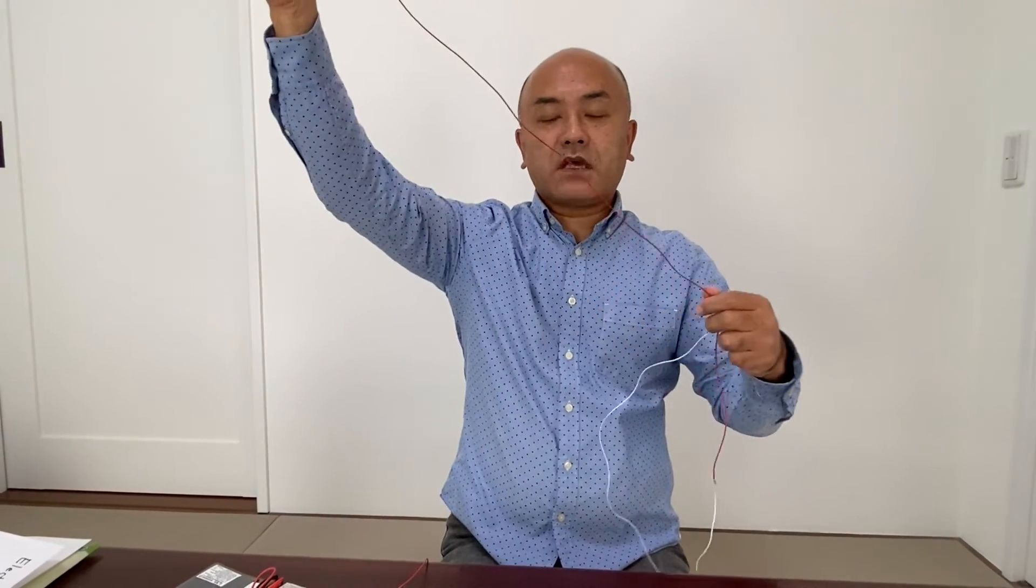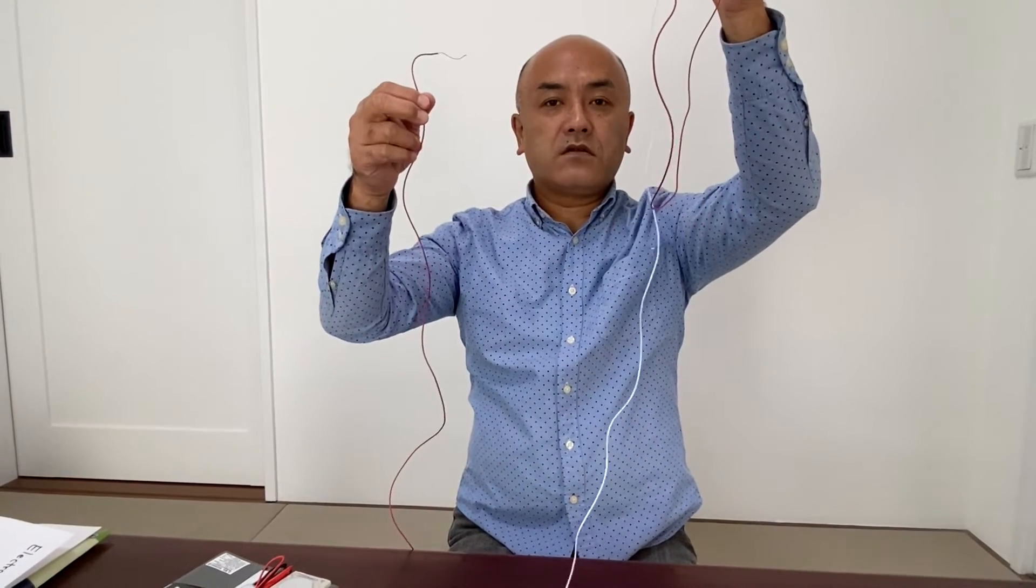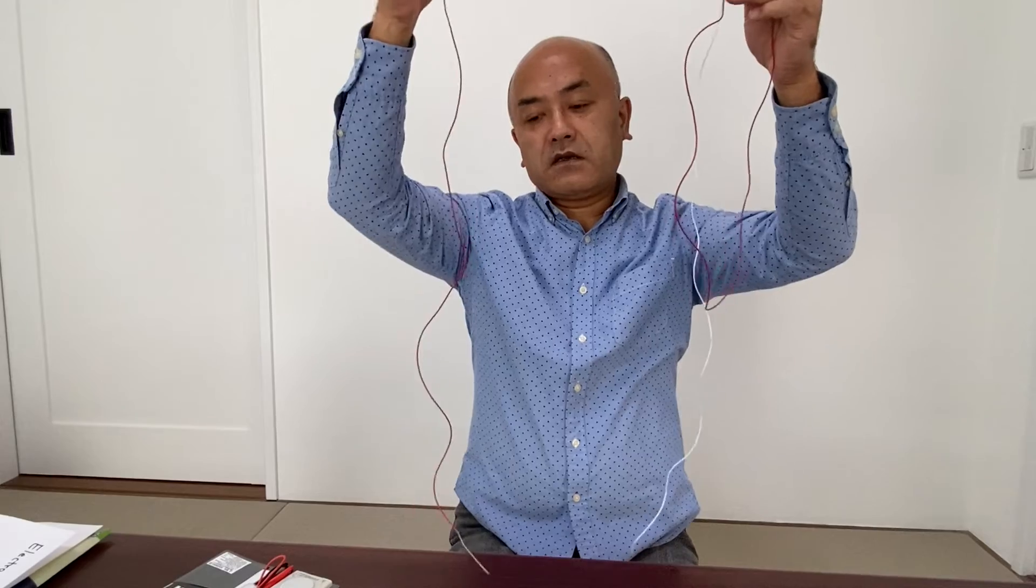The white wires and red wire have the same length. Compared with the first ones, red and white wire has a length twice longer than the red wires.